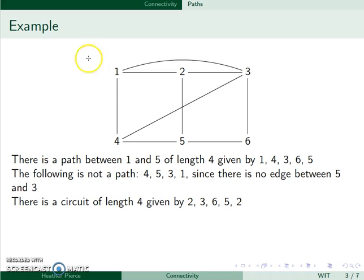We could do a circuit of length 4. I could go from 2 to 3 to 6 to 5 to 2. This is a simple circuit since I only went down edges once, and it's a circuit since I started and ended at the same point, which was 2.